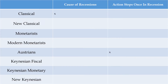Here's our basic breakdown. We're going to cover a number of different schools of thought: the classical school, the new classical, monetarists, what we're calling modern monetarists, Austrians, Keynesians who support fiscal policy activism, Keynesians who support monetary policy activism, and new Keynesians.